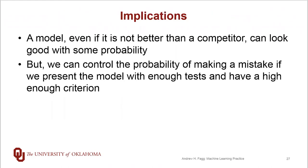Whether or not there's a practical difference, that's a different question. This process is not a perfect process. Even if a model is not better than its competitor, it can look good with some small probability. The saving grace is that we can control this probability by adjusting the alpha term. So this is our approach to dealing with a single charlatan, and you can think of our models as being charlatans. Next up, we want to ask the question not of one charlatan, but of a whole bunch of charlatans.